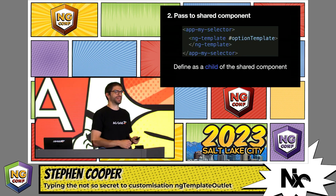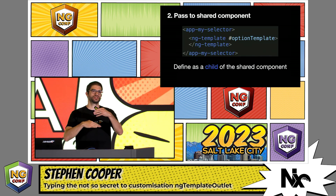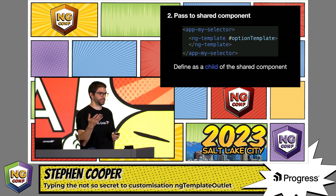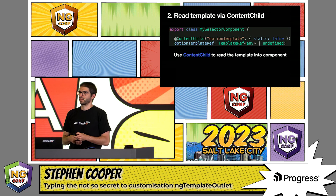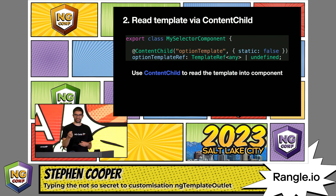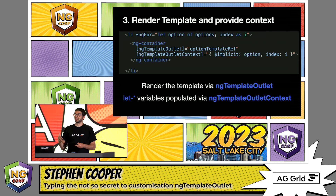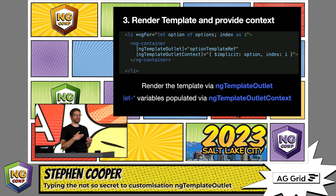Once you've defined your template, we can then pass it to a shared component. Here we've got my selector, and we're going to use content child to extract the template. We define the template within the selector, and then in the selector itself, we use content child — we give it the label we used to get the reference, so option template reference will then contain the reference to that template. Then within our shared component, we can use ngTemplateOutlet to render that template. We've also got the ngTemplateOutletContext where we pass it the option and also the index — this is where the actual information about what we're going to render is provided.